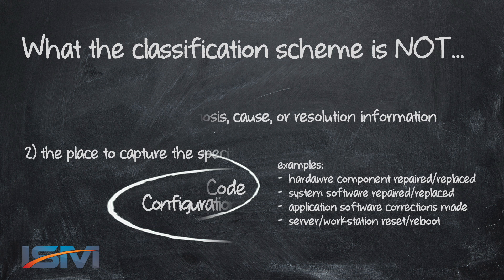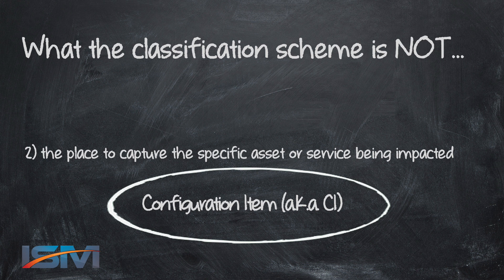Additionally, we have a configuration item or CMDB that's going to have all the CIs — both services and infrastructure — that we are managing. Each incident within an IT service management system should have a CI attached to it. So again, we have another piece of information that we do not want to capture within the classification scheme, but which is invaluable to us when it comes to reporting.